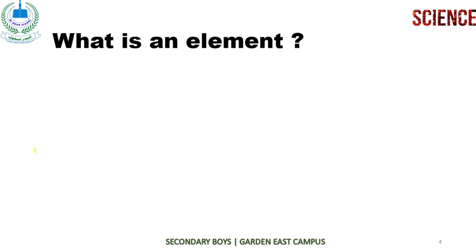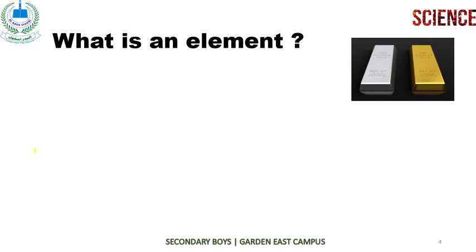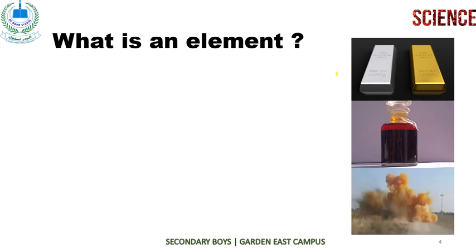What is an element? The first and main question is: what is an element? You have seen around you many different substances — like gold, platinum, liquids, and different gaseous substances. All these things are made up of elements. We can also see that matter is composed of particular elements. Matter is anything that has mass and occupies space, and any matter is made up of a particular element.